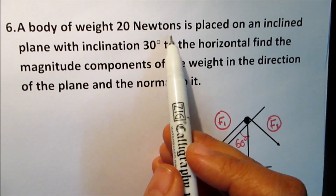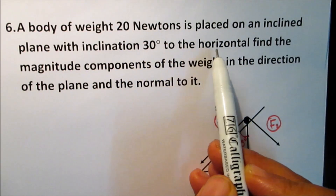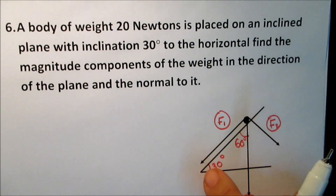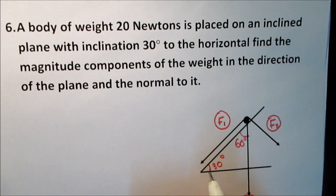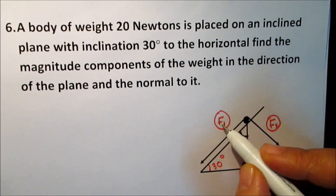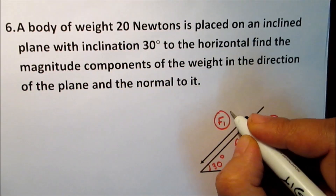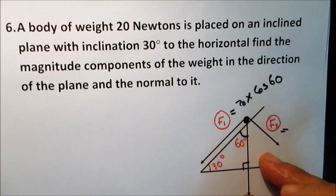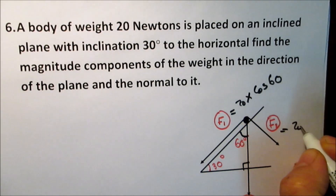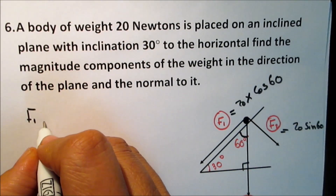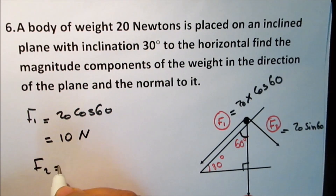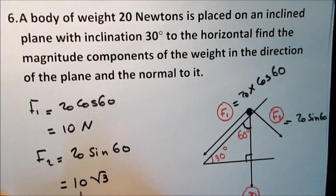A body of weight 20 N is placed on an inclined plane inclined at 30 degrees to the horizontal. Find the components of the weight in the direction of the plane and normal to it. The plane is at 30 degrees, so the complementary angle in the triangle is 60 degrees. F1, the component adjacent to 60 degrees, equals 20·cosine(60) = 10 N. F2, the normal component, equals 20·sine(60) = 10√3 N.